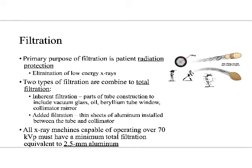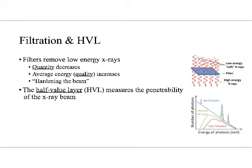Just memorize 2.5. Every diagnostic x-ray machine you will ever operate — unless you change careers and become a dental hygienist — has to have 2.5 millimeters aluminum equivalent. That goes back to characteristic x-ray production and what we know about how these x-ray tubes function.